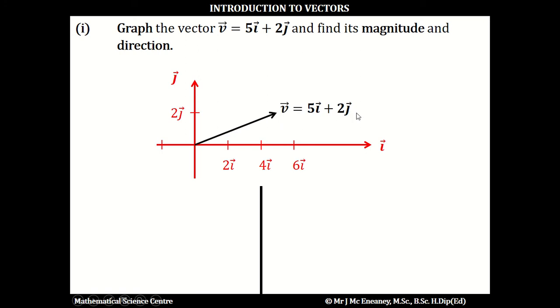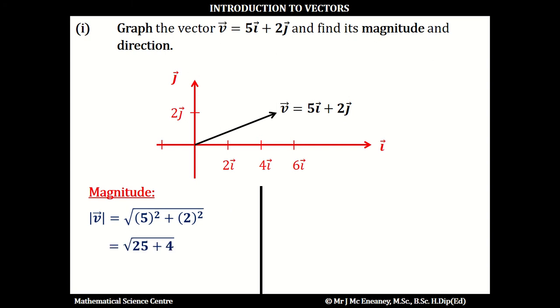If we want to get the magnitude, we're going to use Pythagoras' theorem. So the magnitude of v is going to be the square root of 5 squared plus 2 squared, and that works out as the square root of 25 plus 4, which is the square root of 29.